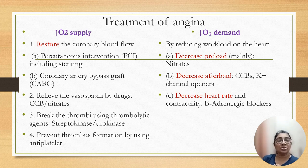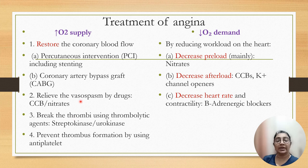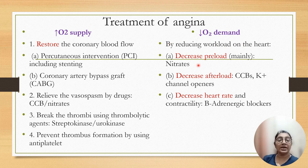We can increase oxygen supply in unstable angina by restoring coronary blood flow through percutaneous intervention, stenting, or coronary artery bypass; relieve vasospasm by giving calcium channel blockers and nitrates; break thrombi using thrombolytic drugs like streptokinase and urokinase; and prevent thrombus formation using antiplatelet drugs. To reduce oxygen demand, we can use nitrates to decrease preload, calcium channel blockers and potassium channel openers to decrease afterload, and beta-blockers to decrease heart rate.